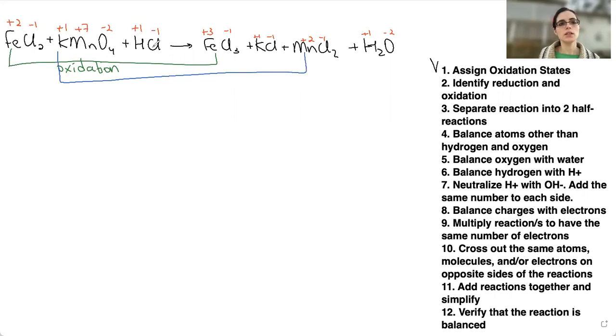Reduction happened here specifically for manganese. Manganese has an oxidation number of plus seven and it went to having an oxidation number of plus two. So that means that there was reduction that happened or gaining of electrons. When we gain electrons, we gain negative charge. So we have to become more negative or less positive. So that's what happened. We identified reduction and oxidation. Checkmark.